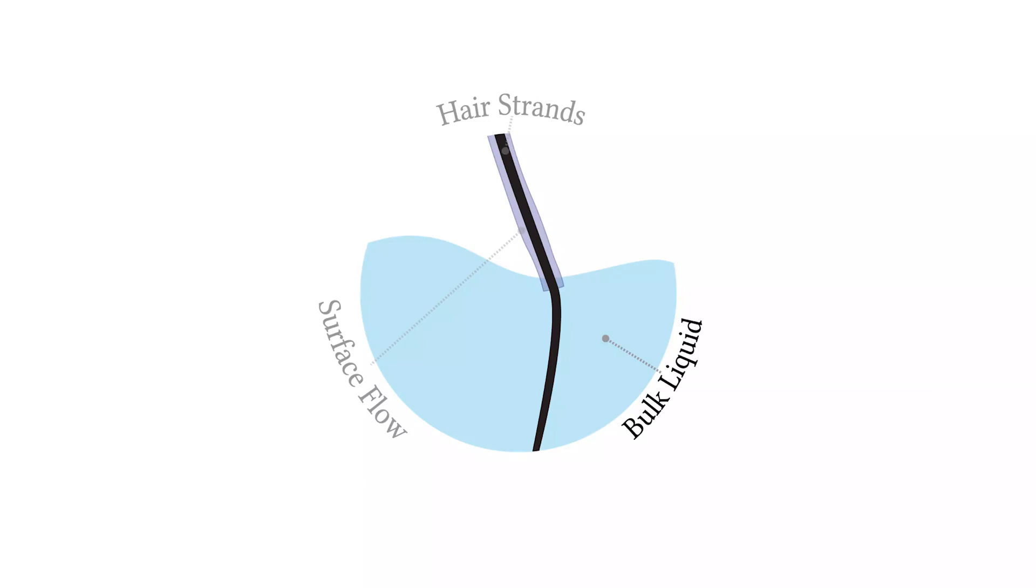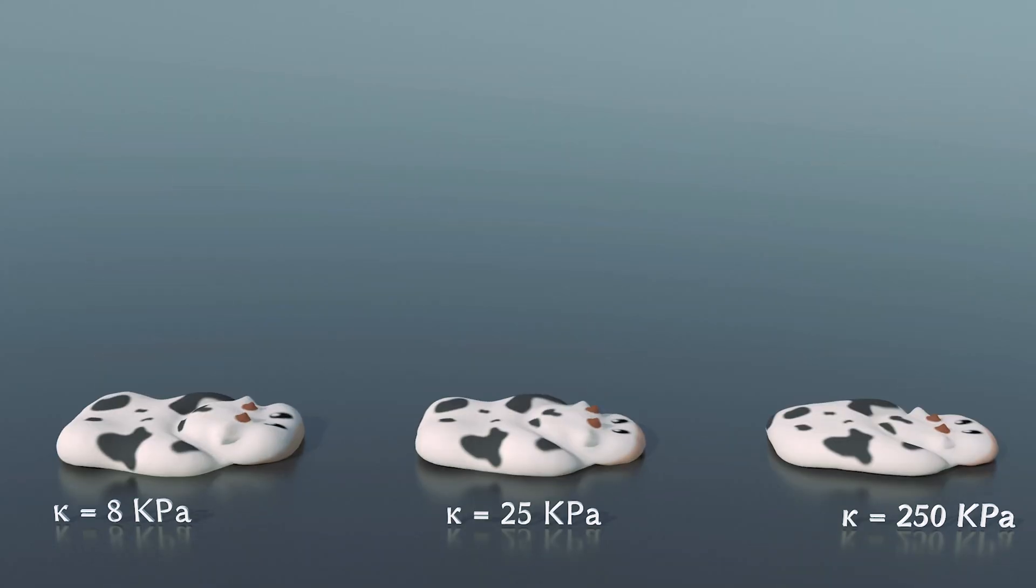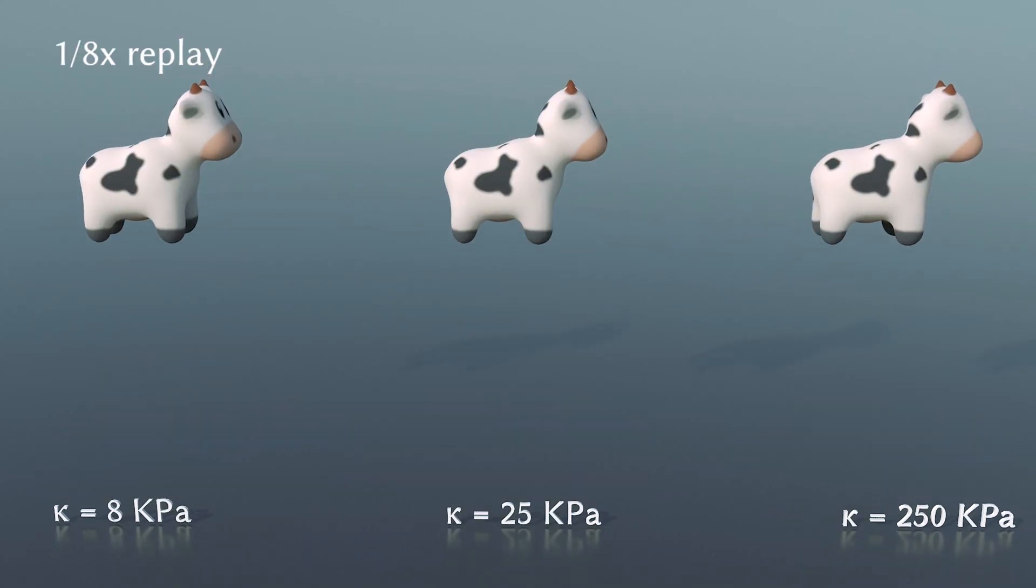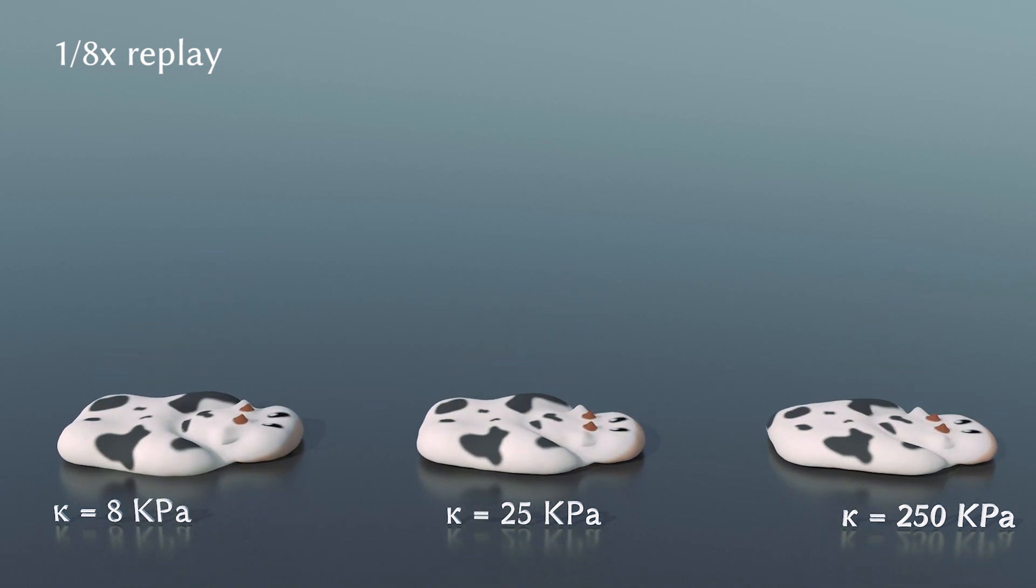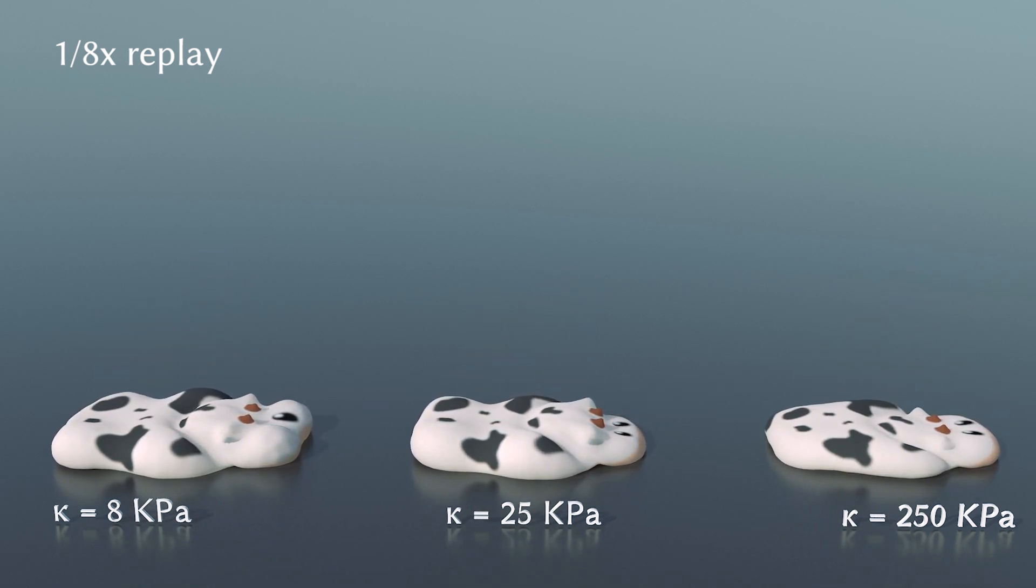For bulk, shear-dependent liquids, our framework considers their compressibility during simulation, in contrast to prior work. Here, we simulate three cows made of shaving cream with different bulk moduli. Correctly handling compressibility is crucial for achieving the correct visual appearance.